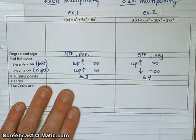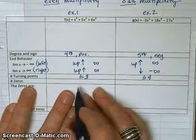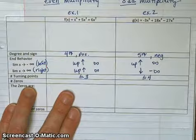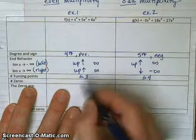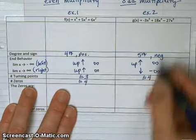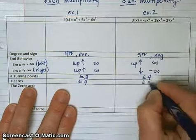The zeros, that is where you can have at most the same as the degree. So here, the number of zeros, I can have less than or equal to four of them. Here, I can have less than or equal to five zeros.